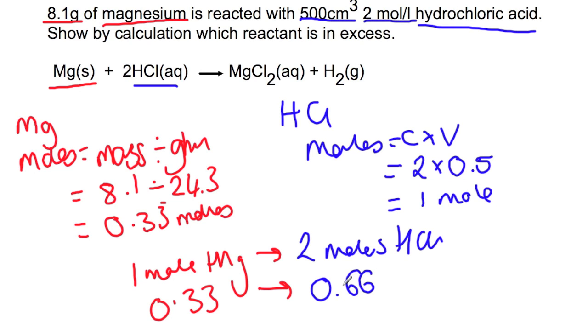So here we can see that we need 0.66 moles of HCl. We actually have 1 mole of HCl. So this reactant must be in excess. That means that the magnesium is our limiting reagent and will dictate how much magnesium chloride and hydrogen is produced.